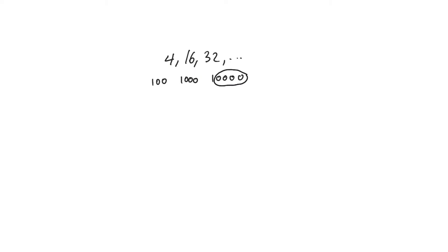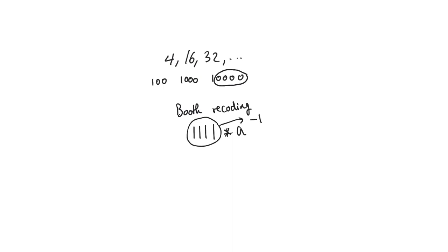This happens when we have long strings of zeros in the multiplier operand, which allows us to trivialize most of the summands. Booth's recoding algorithm also allows us to benefit from long strings of ones, not just strings of zeros. For a four-bit word, the worst case is all ones, because that means four active summands. But we can recognize that 1111 is simply minus one in two's complement, so multiplying by it gives simply minus a.